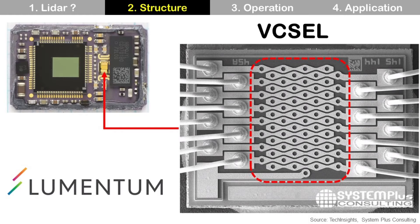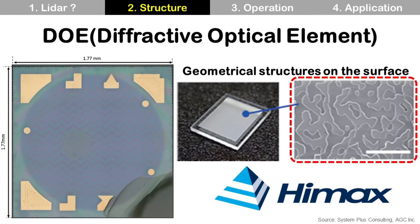This is a more detailed image of the pixel, the laser light source. At the center area, the pixel generates and emits IR laser light. It is made by a company named Lumentum. This is a more detailed image of DOE, the diffractive optical element. It is a kind of window made of glass or quartz, and there are many tiny geometrical structures on the surface. DOE is made by a company named HIMAX.